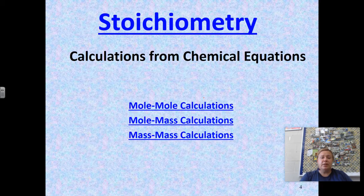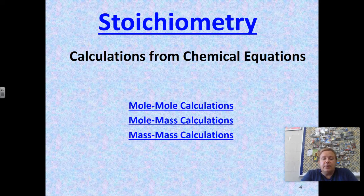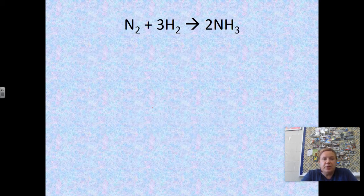There are different types of calculations for chemical equations. You can go from moles directly to moles, from moles to mass, or from mass to mass. I'm going to show you some different potential ways for each of these.